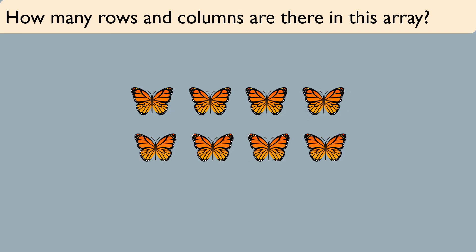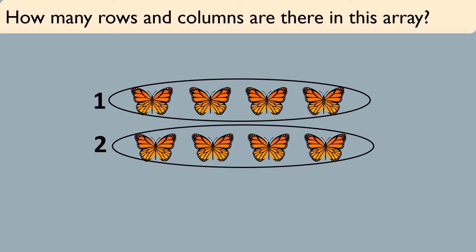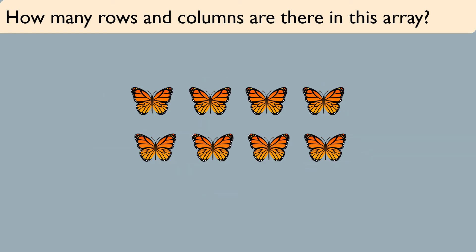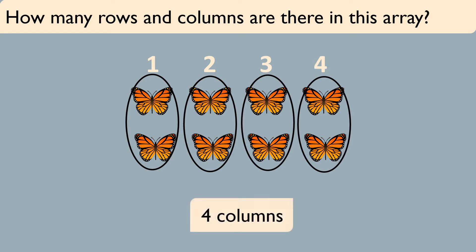How many rows and columns are there in this array? Let's find out the number of rows first. 1, 2. We have 2 rows here. Now let's find out the number of columns. 1, 2, 3, 4. We have 4 columns.